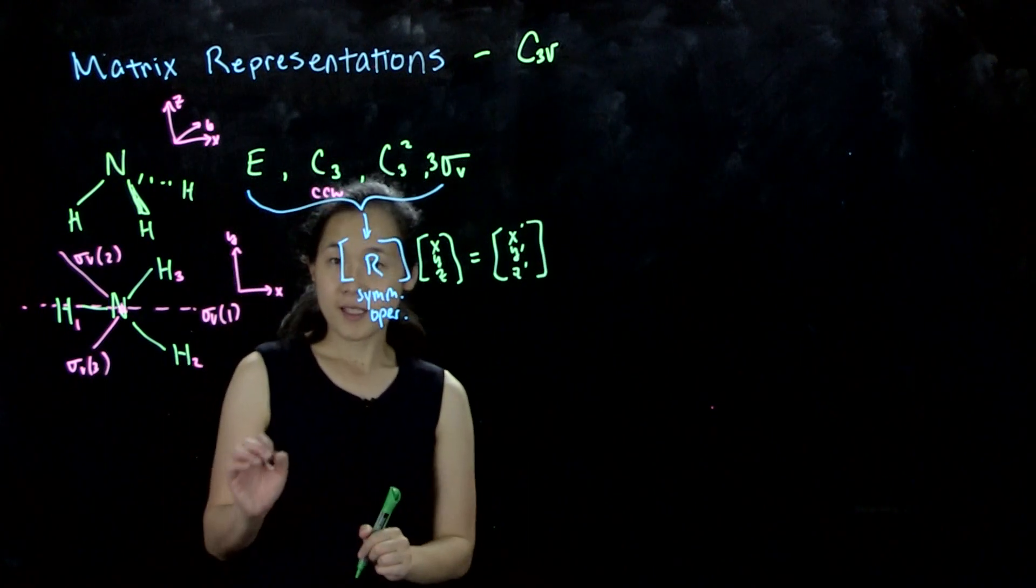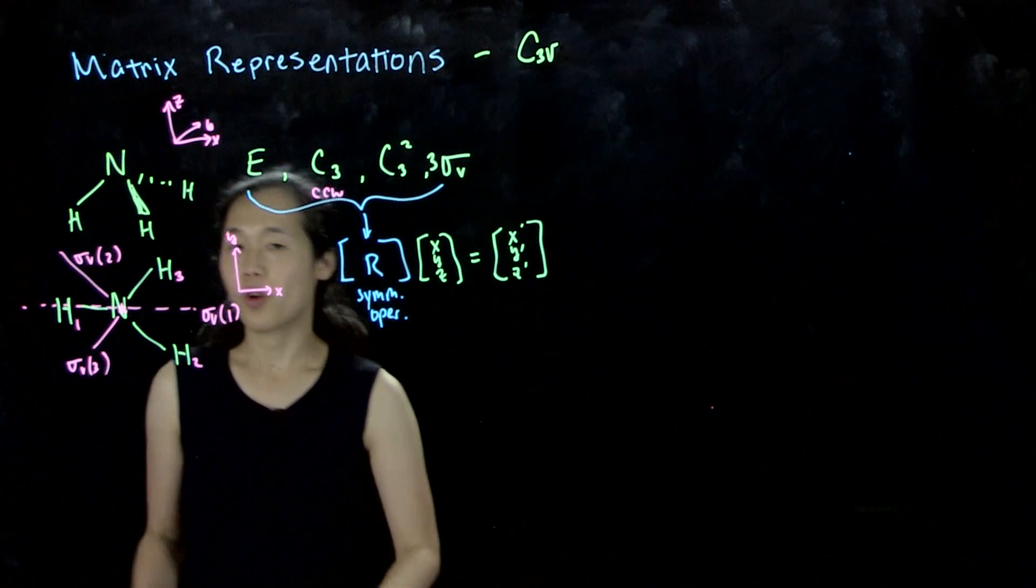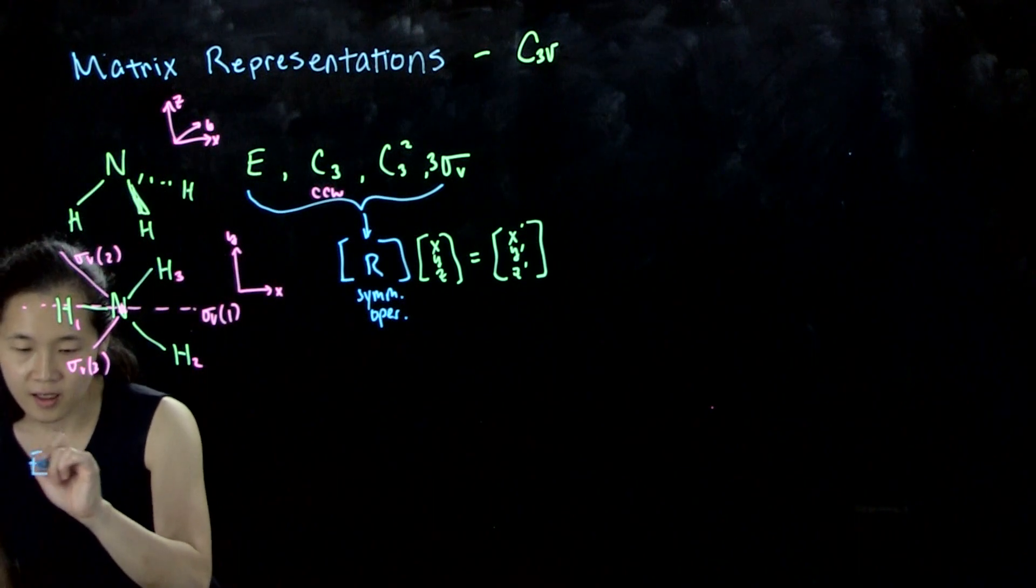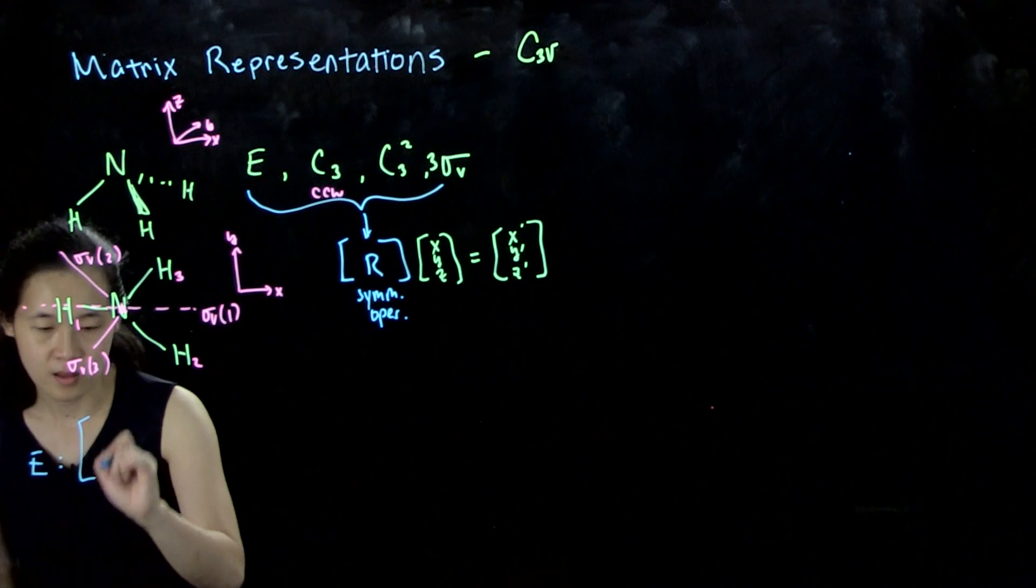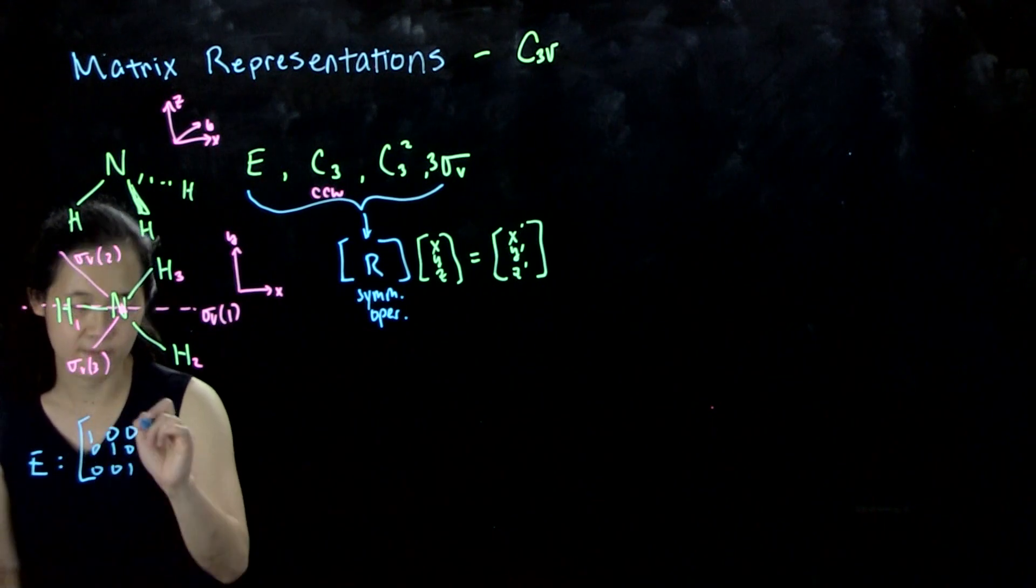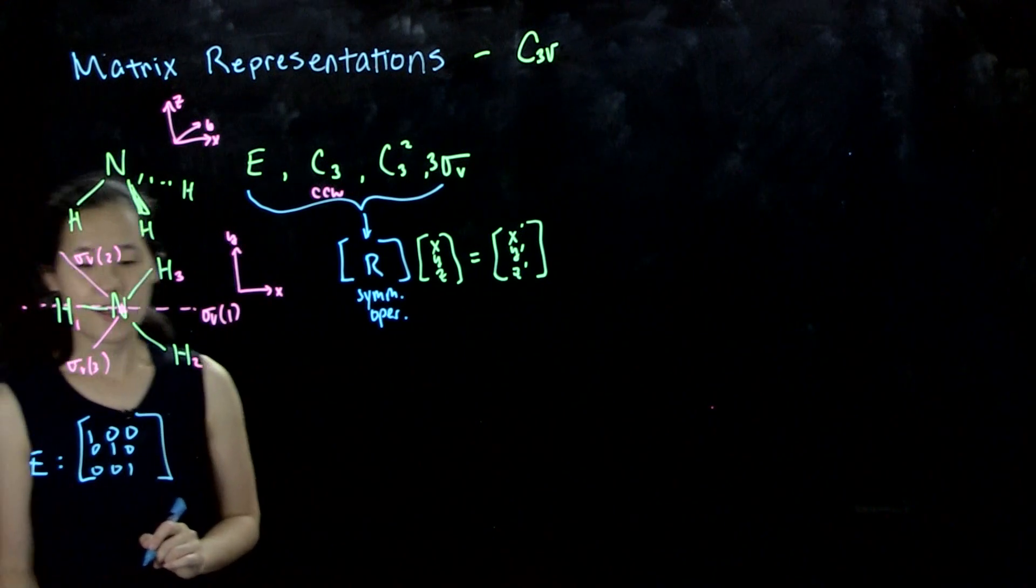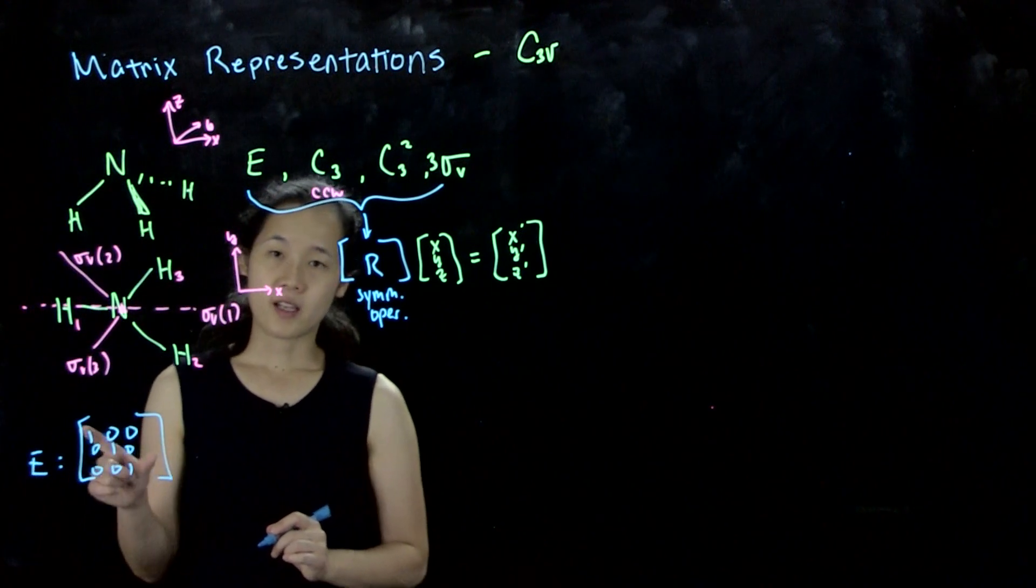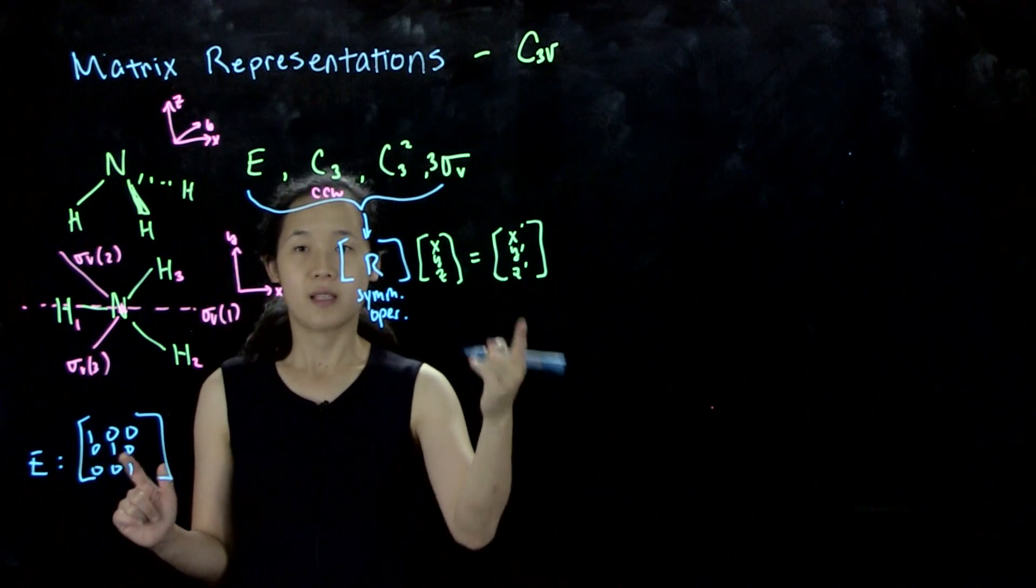From our last class I mentioned that we already know what the E matrix is. E is always going to be 1 0 0, 0 1 0, 0 0 1 and that's because this is the only matrix that can turn x, y, z into x, y, z by itself.